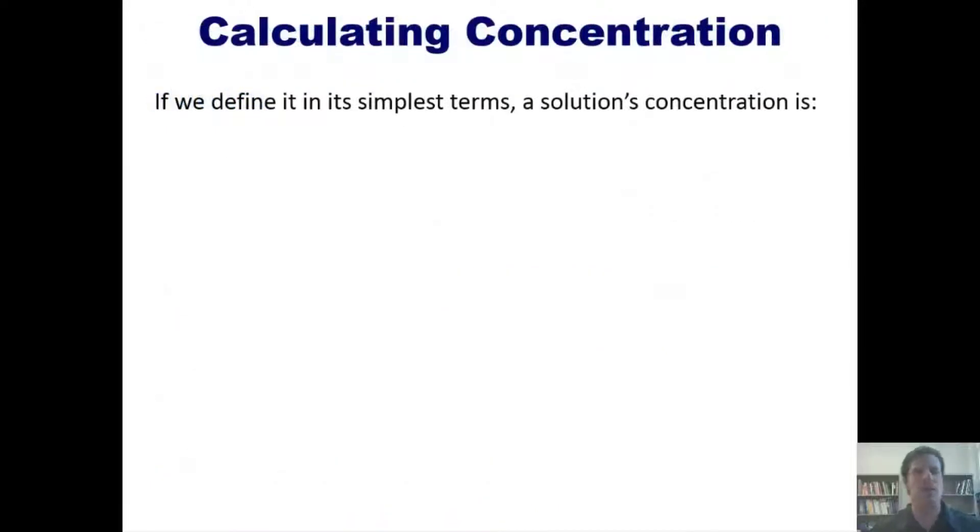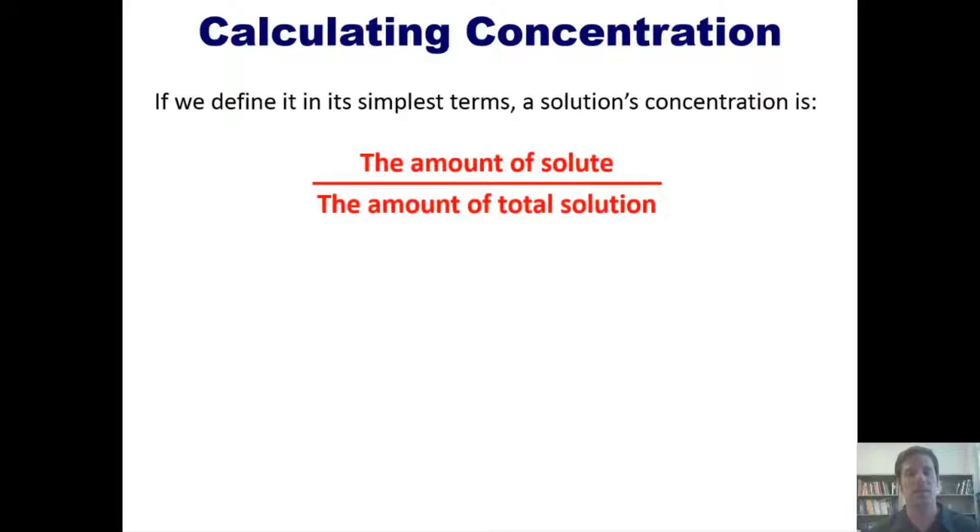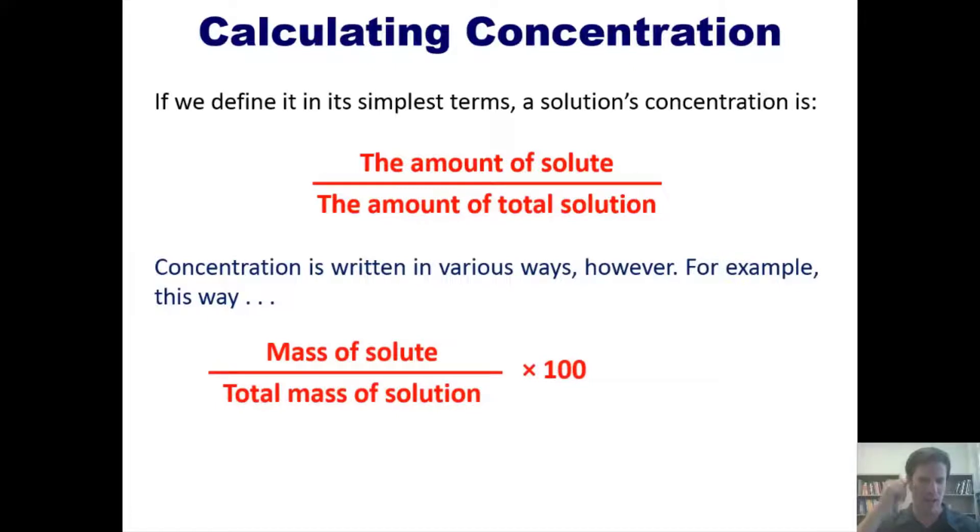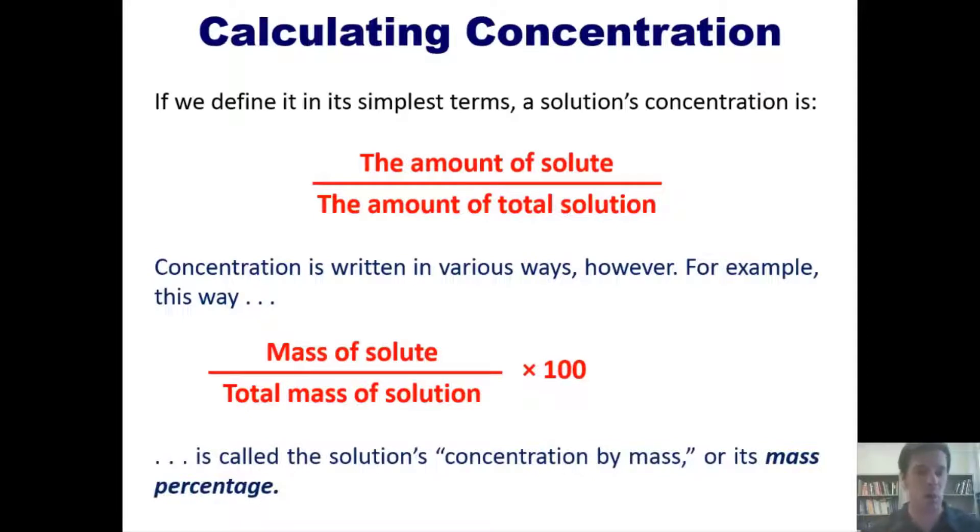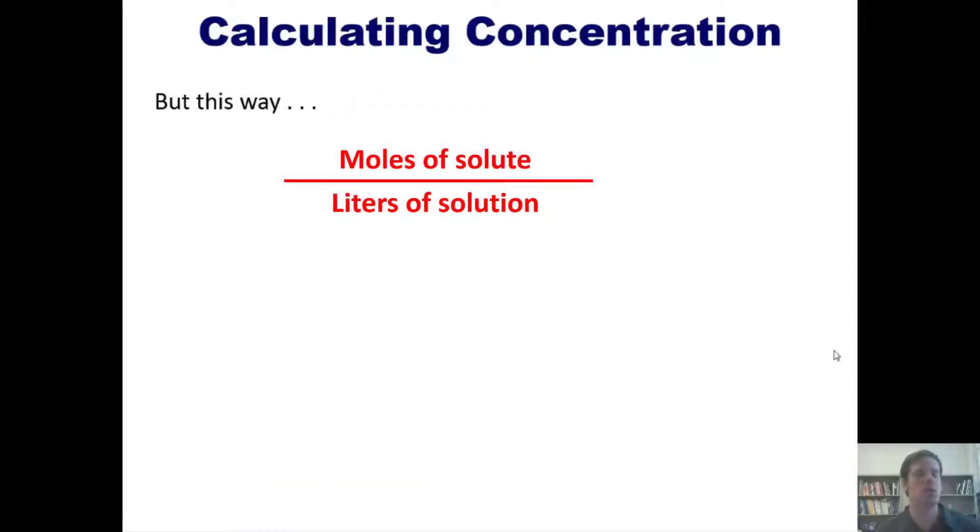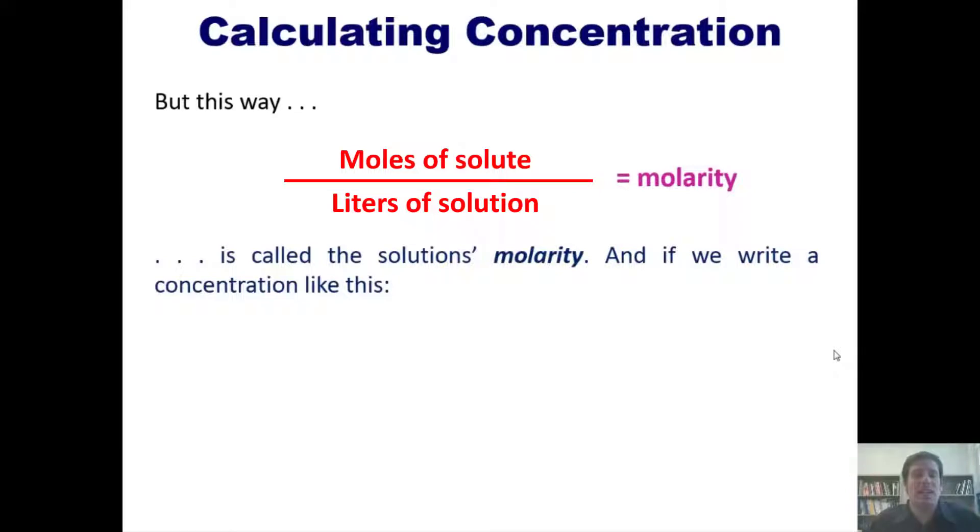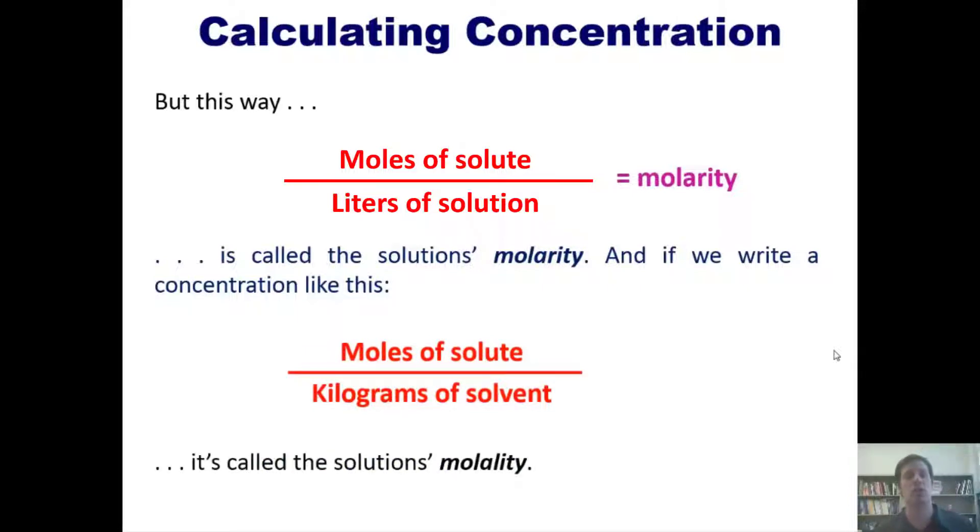Let's get started by teaching you how to calculate concentration. In its simplest terms, a solution's concentration is the amount of solute divided by the amount of solution. Concentration can be written in various ways. For example, mass of solute divided by total mass of solution times 100 is known as the solution's concentration by mass or mass percentage. Separately, moles of solute divided by liters of solution is the solution's molarity. And moles of solute divided by kilograms of solvent is known as the solution's molality.